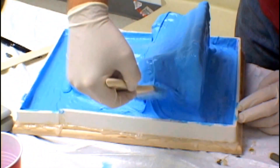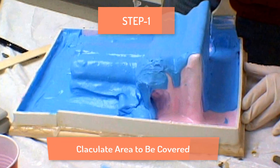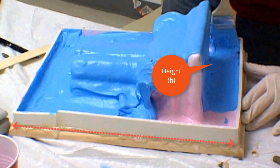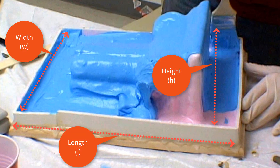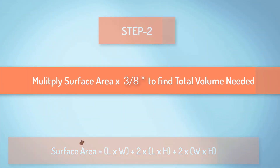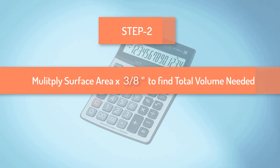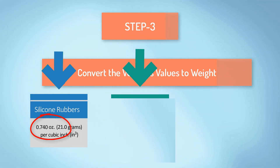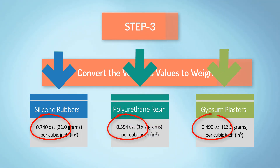Step one is to calculate the area that will be covered by the mold material. Calculate the area of each side and the top by multiplying length times height of each side and top. Add all the areas together to determine the total area to be covered. In step two, multiply the total surface area times three-eighths of an inch, which is the thickness of the rubber mold — the result provides total material volume. Step three is to convert the volume value you just determined into its weight value, using one of the constants previously specified.